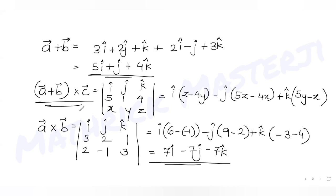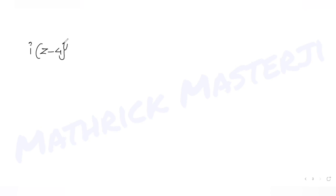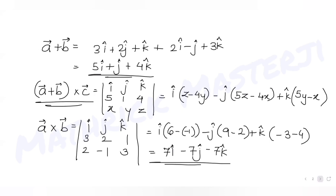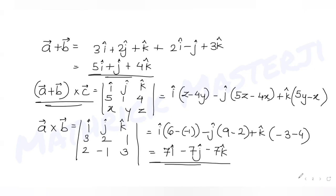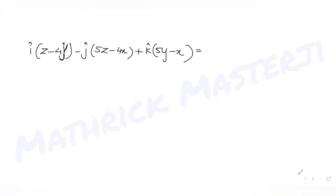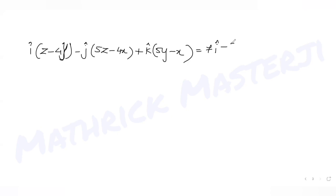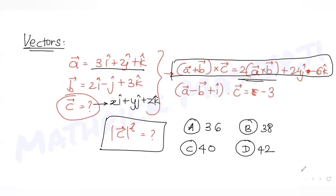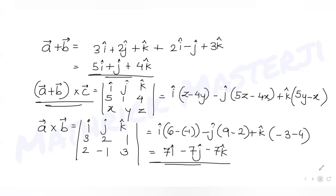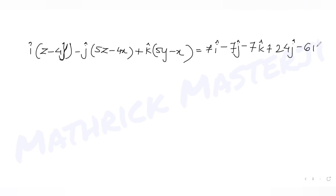Applying the first condition, we set (a + b) × c equal to 2(a × b) + 24j − 6k, which gives us i(z − 4y) − j(5z − 4x) + k(5y − x) = 7i + (−14 + 24)j + (−14 − 6)k = 7i + 17j − 13k. This gives us three equations: z − 4y = 7, 5z − 4x = −17, and 5y − x = −13.